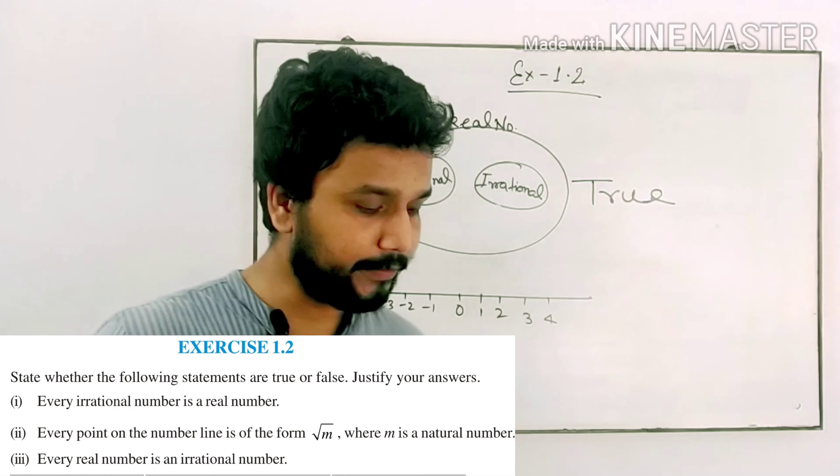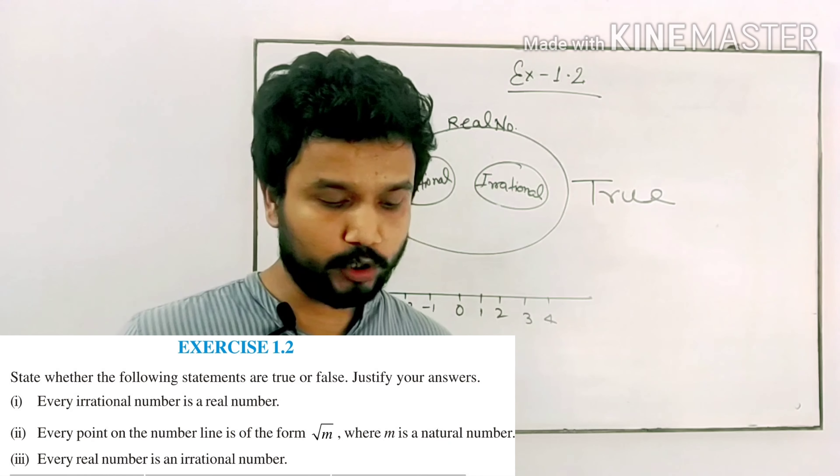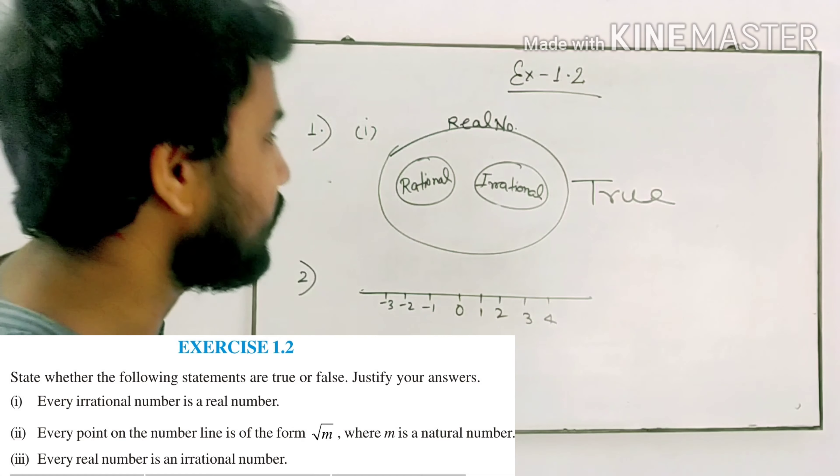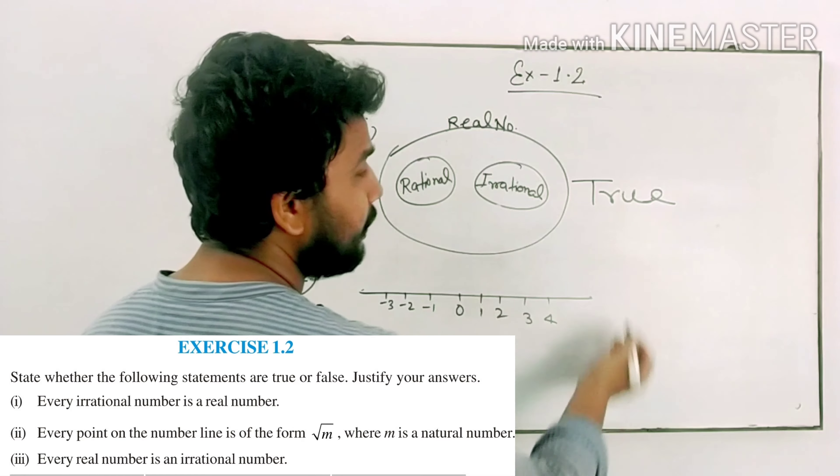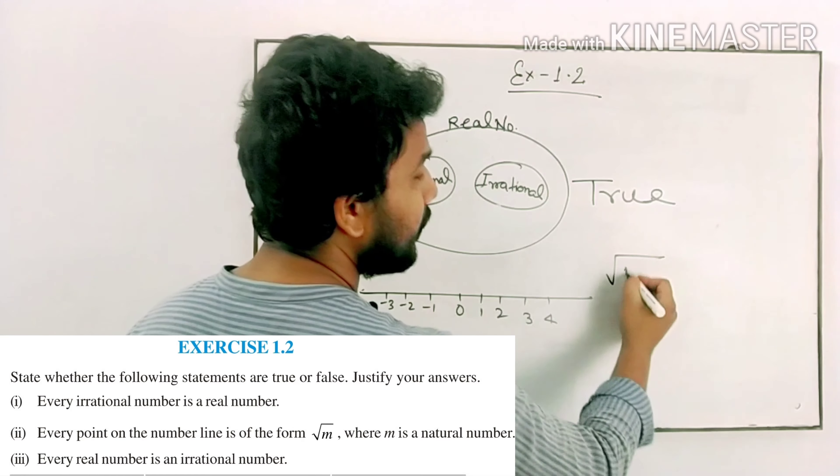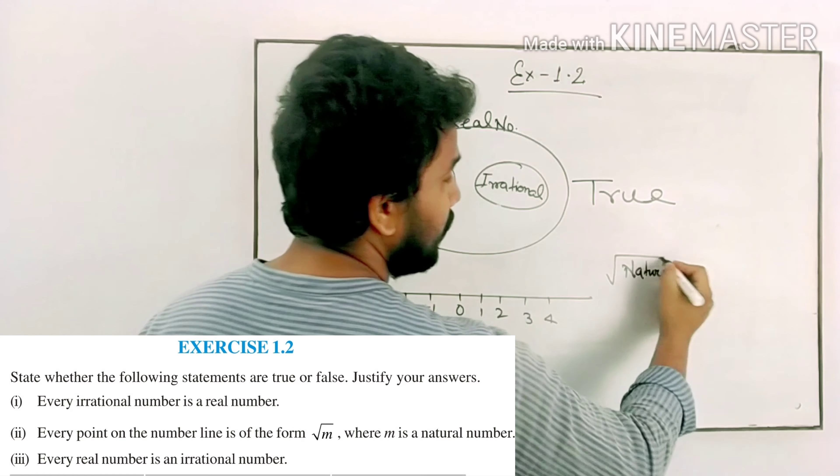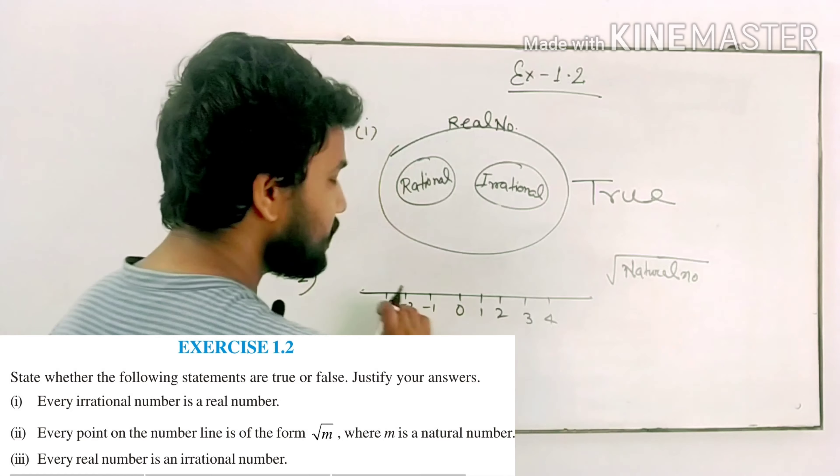Next, the second question: Every point on the number line is of the form root M where M is a natural number. This will be false because under root, no natural number can represent all the real numbers.